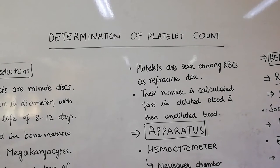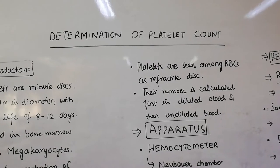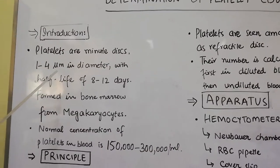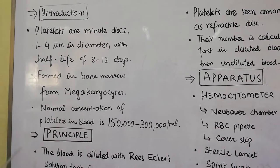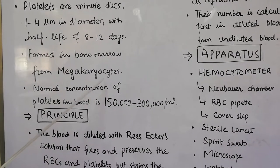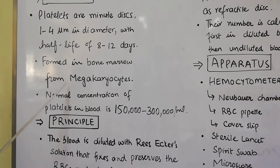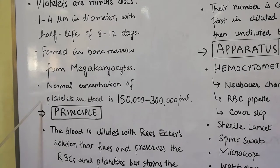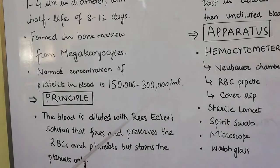First of all, there is a little bit of introduction about platelets. You already know that platelets are minute discs 1-4 micrometers in diameter with a half life of 8-12 days. Platelets are formed in the bone marrow from megakaryocytes. The function of platelets in the blood is that it helps in blood clotting. The normal concentration of platelets in blood is 150,000 to 300,000 per ml of blood.